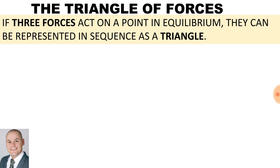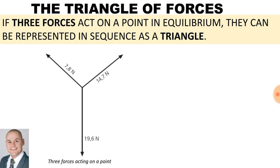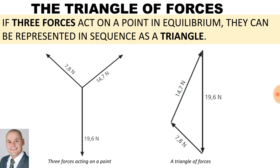The triangle of forces: if three forces act on a point in equilibrium, they can be represented in sequence as a triangle. Here are our three forces acting on a point — 7.8 Newtons, 14.7 Newtons, and 19.6 Newtons. If we represent these forces as a triangle, we get a triangle of forces.